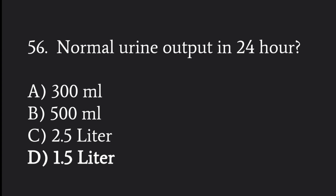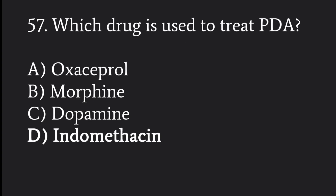Normal urine output in 24 hours is 1.5 liters on average. To keep the patent ductus arteriosus patent, we use indomethacin. In babies with duct-dependent lesions, PDA normally closes after birth, but when we need to keep it open, we give indomethacin.